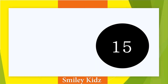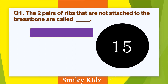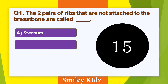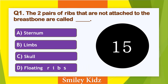Question number 1. The two pairs of ribs that are not attached to the breastbone are called. Options are: A. Sternum, B. Limbs, C. Skull, and D. Floating ribs. Your time starts now.